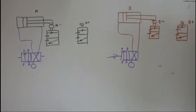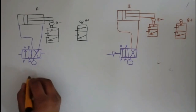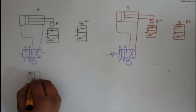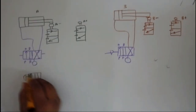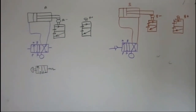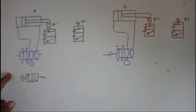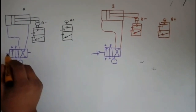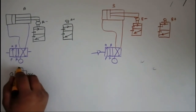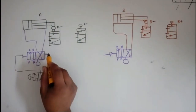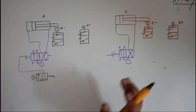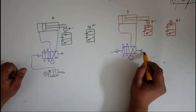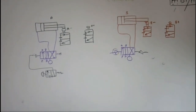There will be another 3/2 valve which is mechanically actuated to start the operation. We don't want the operation to be perpetual — pressing the button starts it, pressing again stops it. Connected lines go to pilot-operated valves. Note that we always use pilot-operated valves in this circuit.